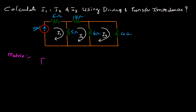For the first loop, I will see what resistors are there. This is 6 ohms and 5 ohms — the current is flowing through both. So I add those two resistors and write 11. For the common resistance between the first and second loops, that is 5, but the currents are flowing in opposite directions, so I take it as minus 5. For the first and third loops, there is no common resistor, so I write 0.